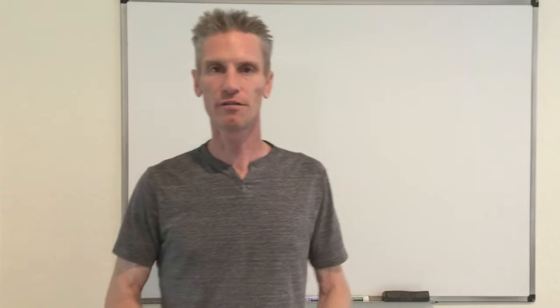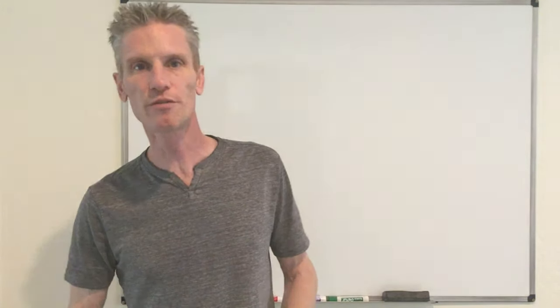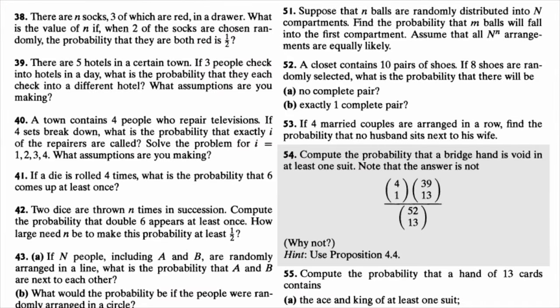Hi everyone, welcome back to my YouTube videos. In this video, I'm going to solve exercise 2.54 of the textbook, 'First Course in Probability'. The goal of this problem is to find the probability that a bridge hand is void in at least one suit.